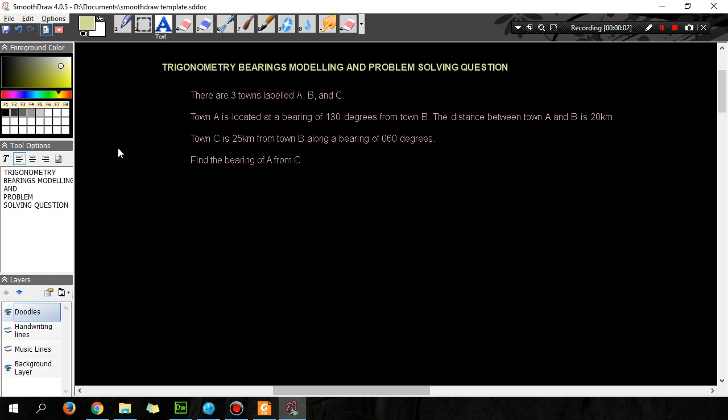Hey guys, it's Eddie the Magic Monk here. Today we're going to go through this trigonometry problem-solving question to do with bearings. So have a go at it first and then watch how I do it. There are three towns labeled A, B and C. Town A is located at a bearing of 130 degrees from town B and the distance between town A and B is 20 kilometers. So let's draw that.